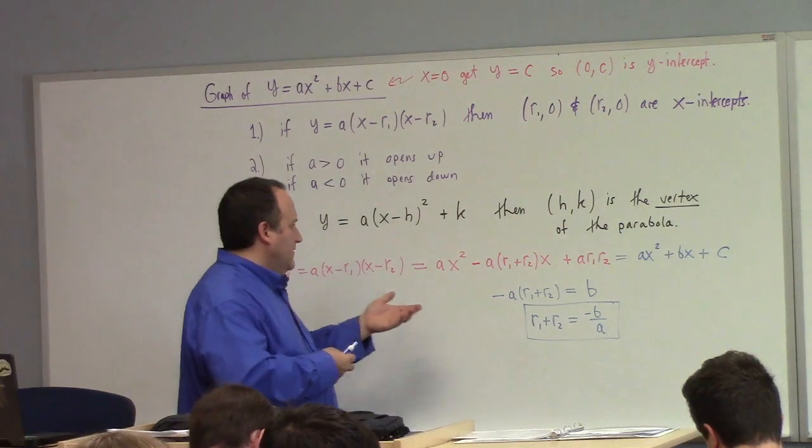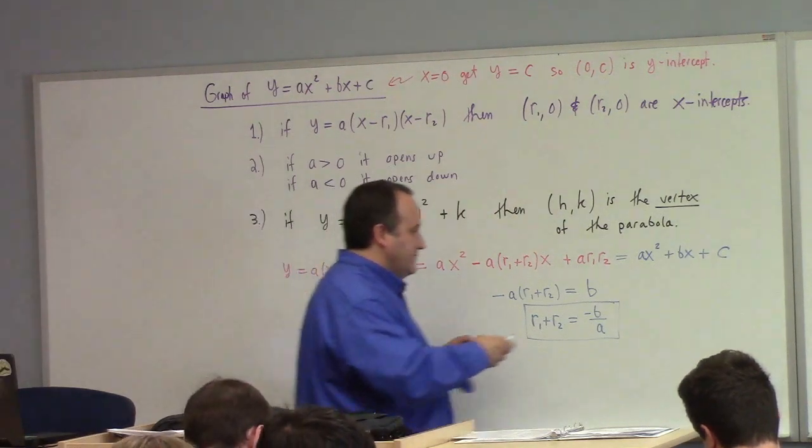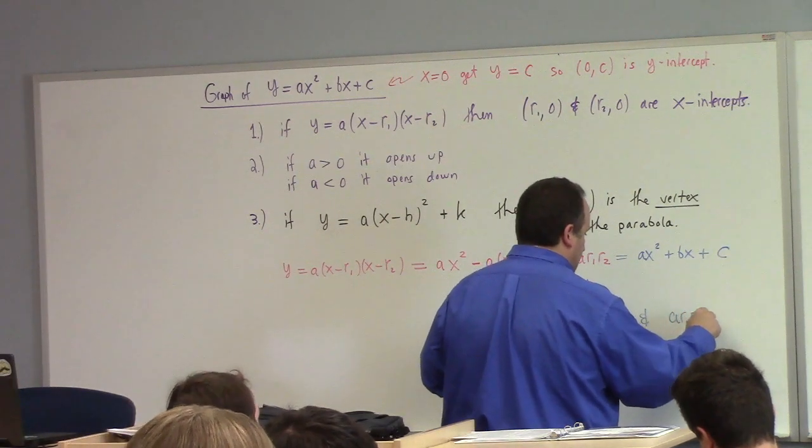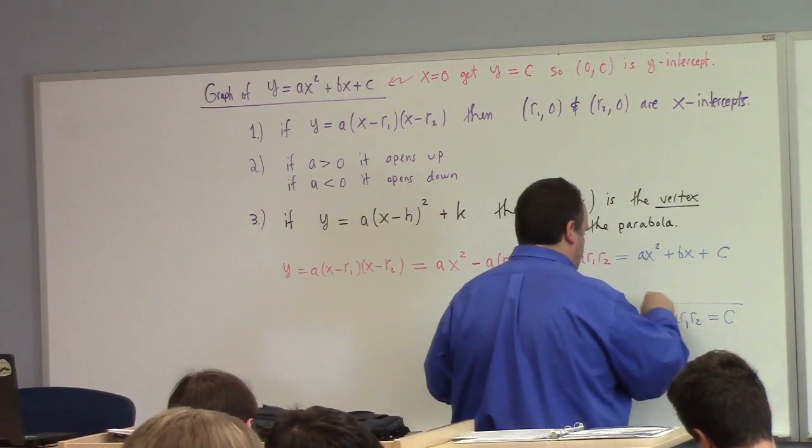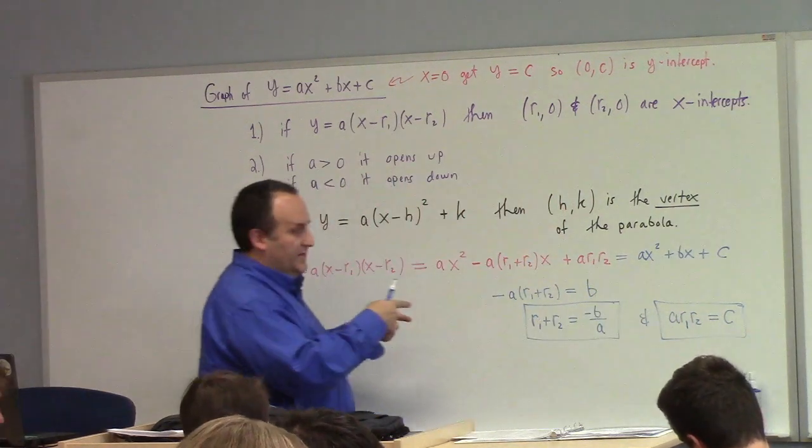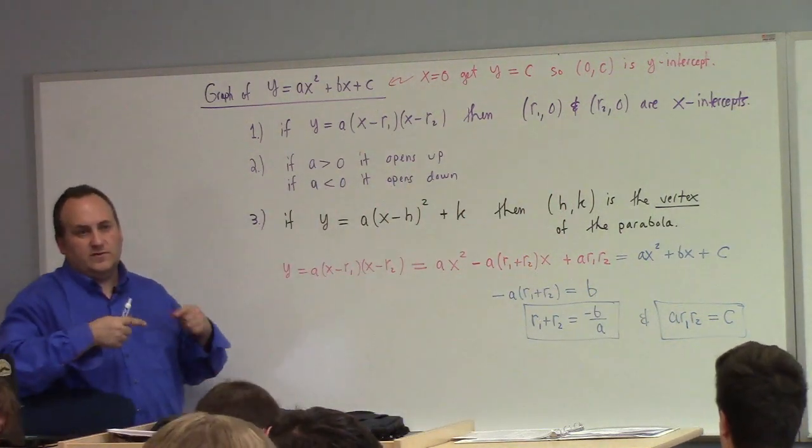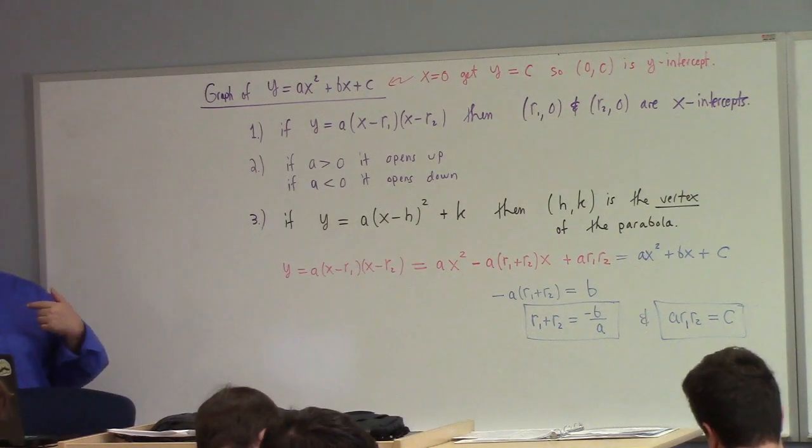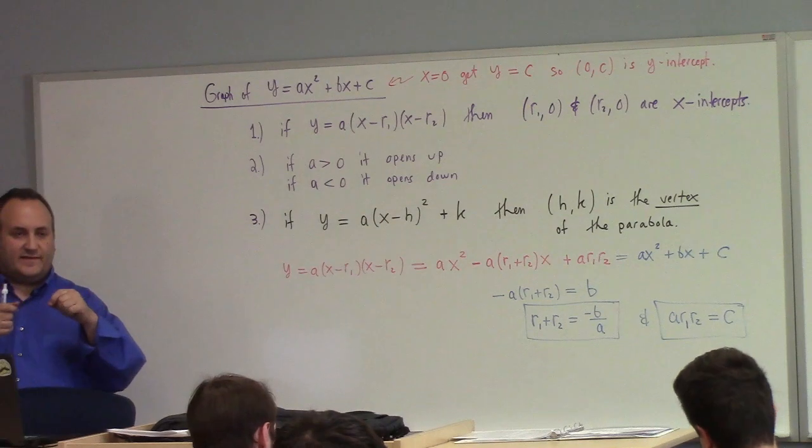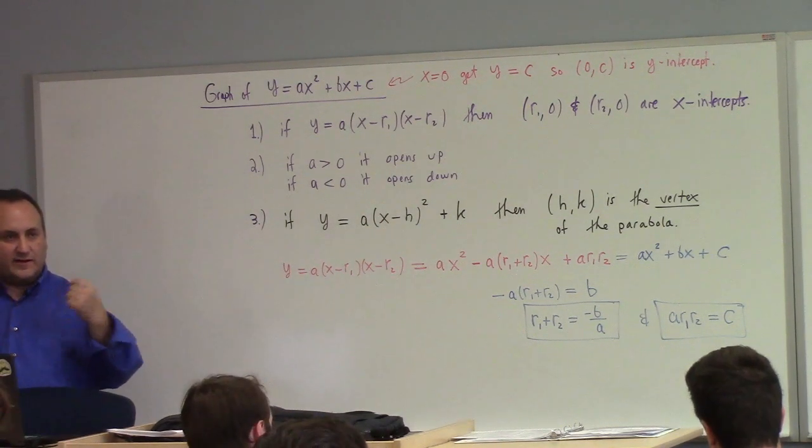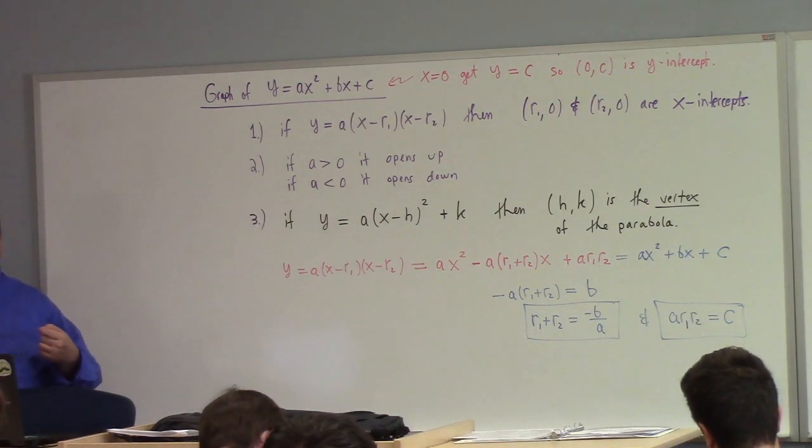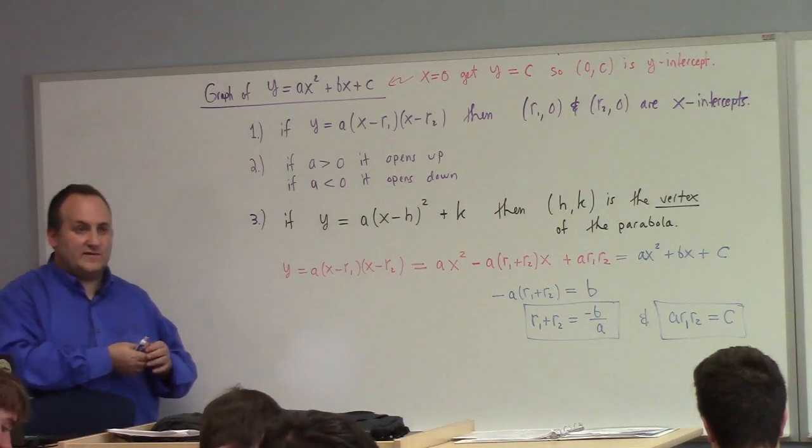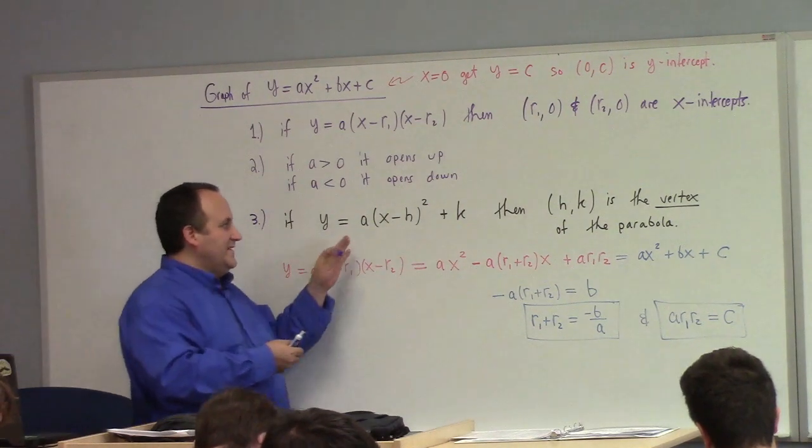What else do we have here? A times the product of the roots is equal to c. You use these in factoring. This is just that thing you do where the sum of the roots has to be equal to the coefficient of x, and the product of the roots has to be equal to the constant coefficient. These formulas are just that in our current notation.